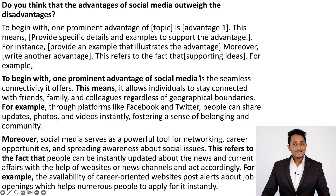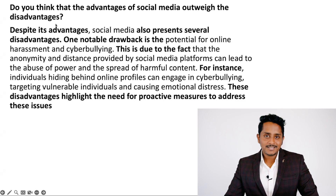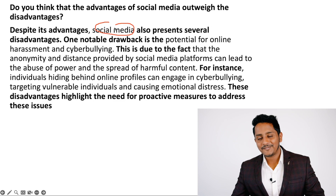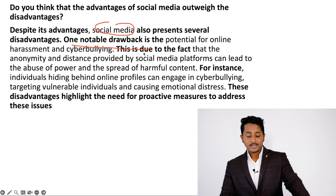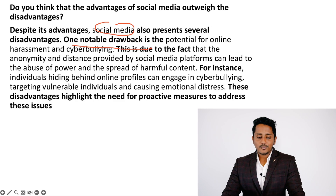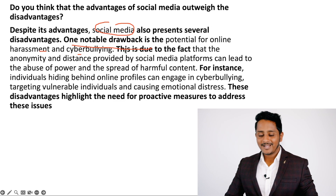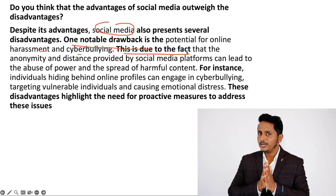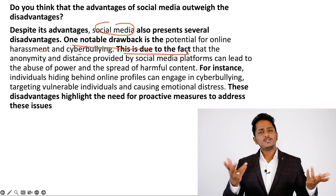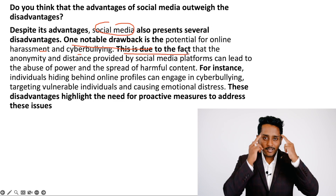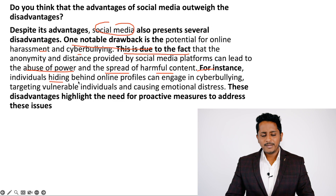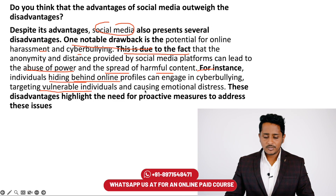For the third paragraph: 'Despite its advantages, social media also presents several disadvantages. One notable drawback is the potential for online harassment and cyberbullying.' Now write a supporting idea — put a question mark after the previous line to get a thought, then write it: 'This is due to the fact that the anonymity and distance provided by social media platforms can lead to the abuse of power and the spread of harmful content. For instance, individuals hiding behind online profiles can engage in cyberbullying, targeting vulnerable individuals and causing emotional distress.'